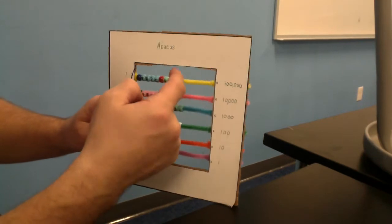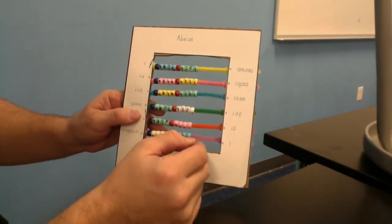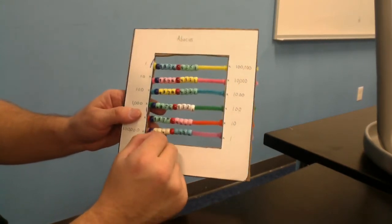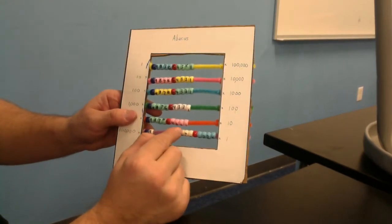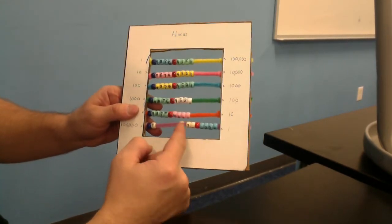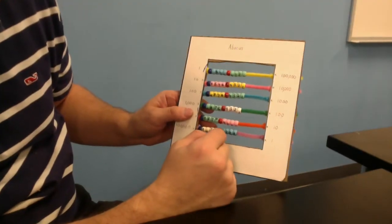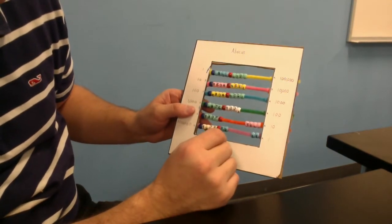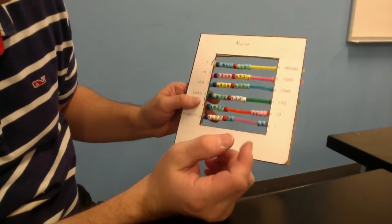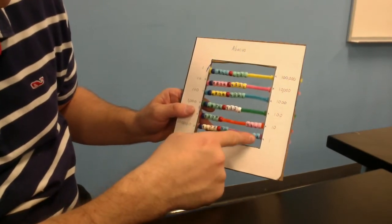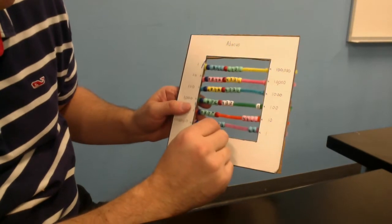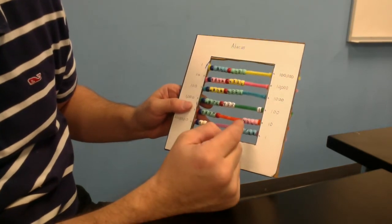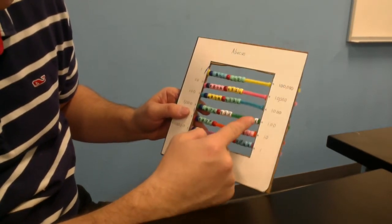To actually use this for math, let's try something simple first. Let's try something like 8 minus 3. So if we start off with 8, that's 8 right there. That's 8 minus 3. 1, 2, 3. Here's a bigger example. Let's say 42 plus 105. 42 plus 100 and 1, 2, 3, 4, 5. So 42 plus, what did I say, 105 is equal to 147.